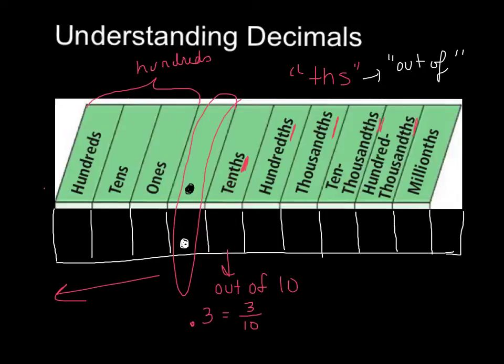When I go to hundredths, I'm talking about out of a hundred. So for example, if I had 0.03, I would be talking about three out of one hundred.